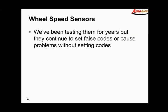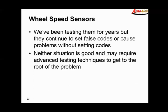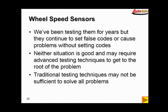That brings us to wheel speed sensors. We've been testing them for years, but they continue to set false codes or cause problems without setting codes, which is even worse. Neither situation is good and may require advanced testing techniques to get to the root of the problem. Traditional testing techniques may not be sufficient to solve all problems. Typically you're basically doing continuity tests on the wires and/or resistance tests on the sensors. That's the typical sort of test on these things. That's not good enough anymore in a lot of cases.